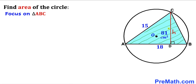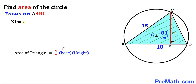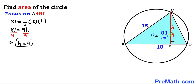Let's focus on triangle ABC and recall the area of a triangle formula: area equals one half times base times height. The area of this blue triangle ABC is 81, its base is 18, and the height is h. So: 81 equals one half times 18 times h. Solving: 81 equals 9h, so dividing both sides by 9, our height h turns out to be 9 centimeter.